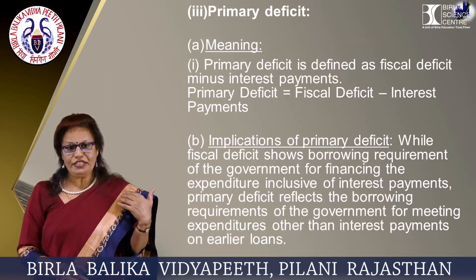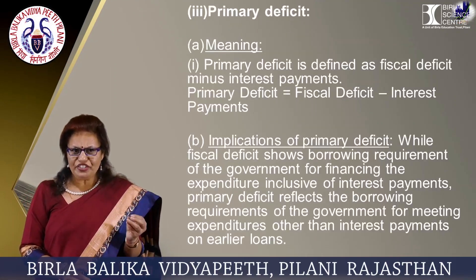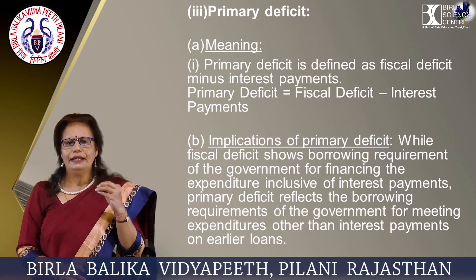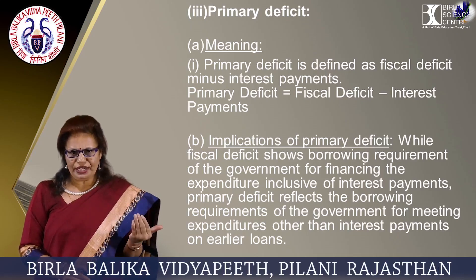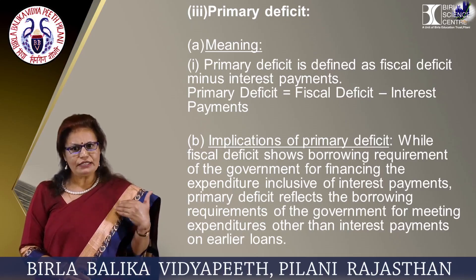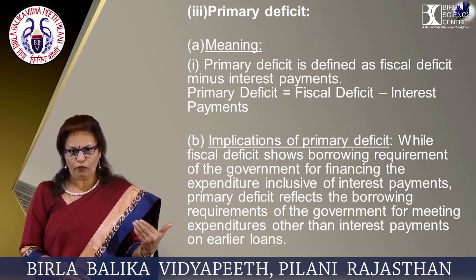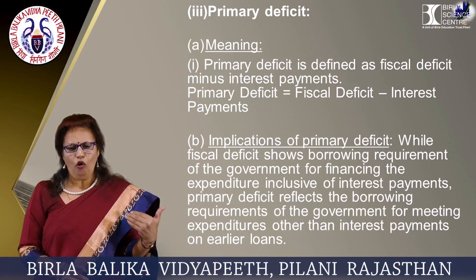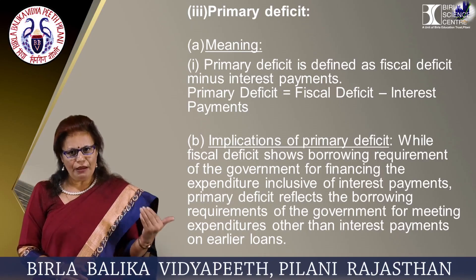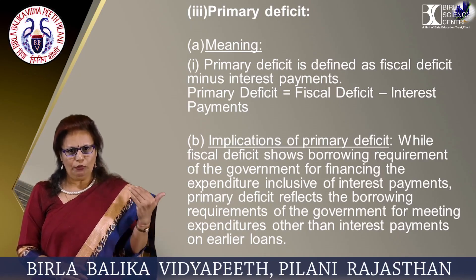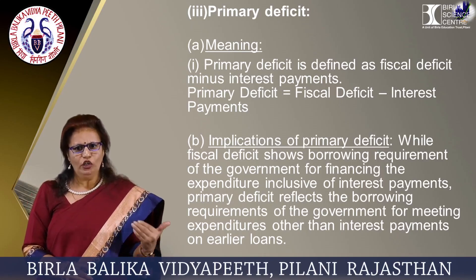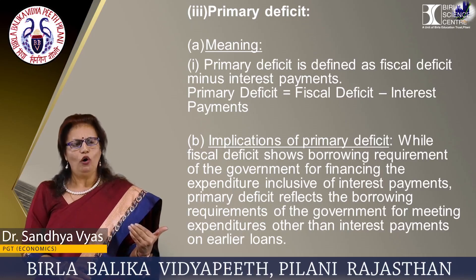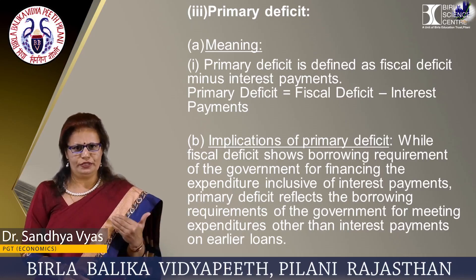Now, what is primary deficit? Primary deficit is defined as fiscal deficit minus interest payments. While fiscal deficit shows the borrowing requirement of the government for financing expenditure inclusive of interest payments, primary deficit reflects the borrowing requirements of the government for meeting expenditures other than interest payments on earlier loans.